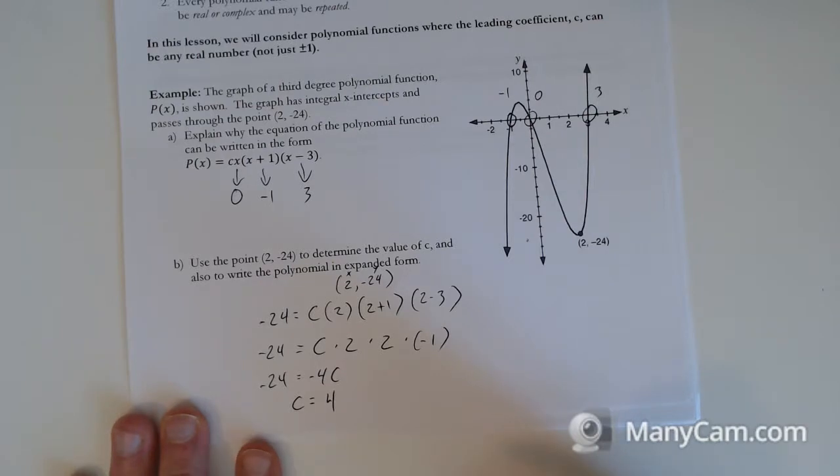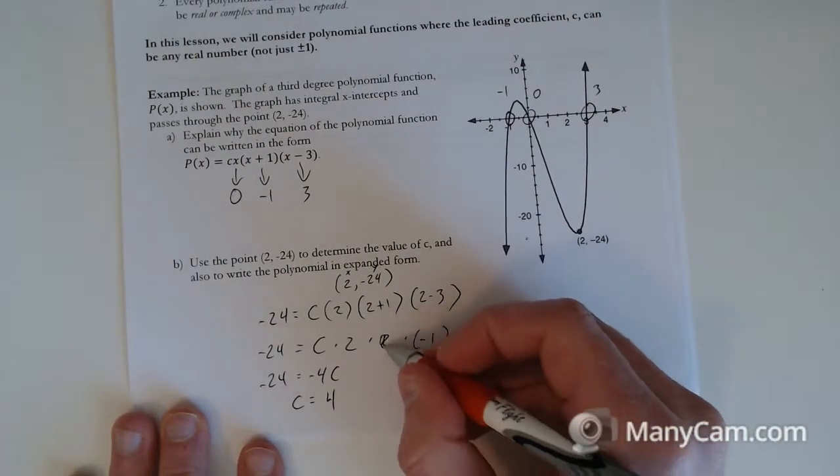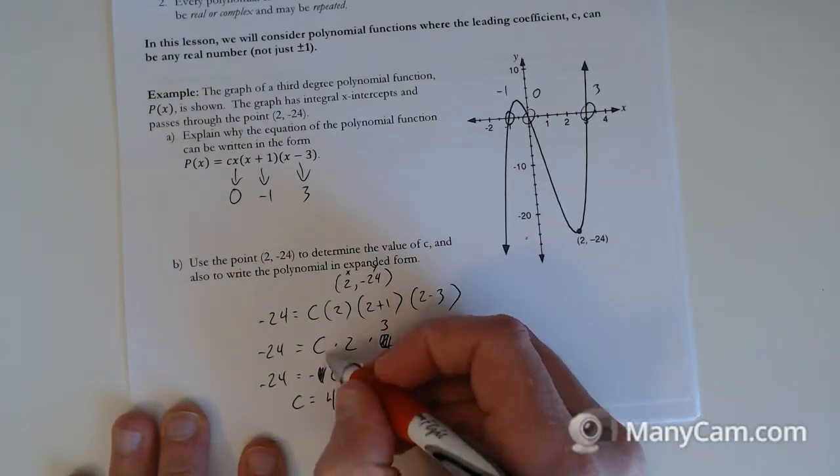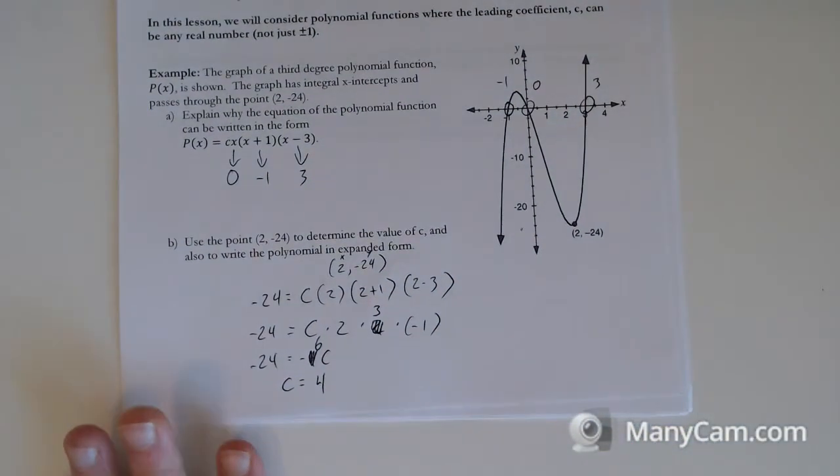So simplifying this, it's going to be c times 2 times 3 times negative 1. Which is negative 6c. c equals negative 24 divided by negative 6. So c is equal to 4. Wait, this is 3, sorry. That should be 3. So this is negative 6. And dividing by negative 6 makes positive 4.